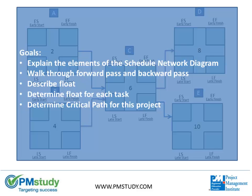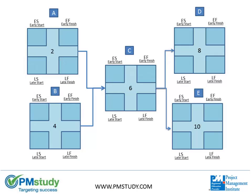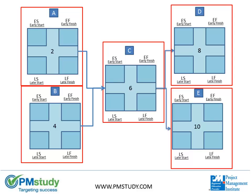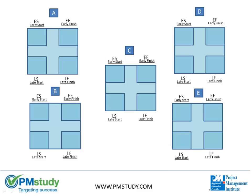Let's first review the different elements of our Project Schedule Network Diagram. The diagram is made up of five activities or tasks: Task A, Task B, Task C, Task D, and Task E. This diagram depicts a finish-to-start relationship, which means the predecessor activity must finish before the successor activity or task starts. The relationships of these tasks are shown through arrows. The arrow from the end of Task A flows to the beginning of Task C, depicting A as a predecessor to Task C. B is a predecessor of C, C is a predecessor to D, and also to E.